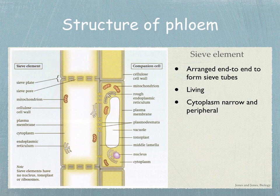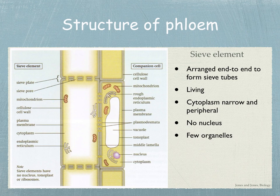However, they don't have nuclei. They've got very few organelles, and the nuclei and other structures are broken down in order to make the sieve tubes more hollow, and so reduce resistance to the flow of liquid in them. They've got no ribosomes and no tonoplasts. They do have phloem proteins, though.